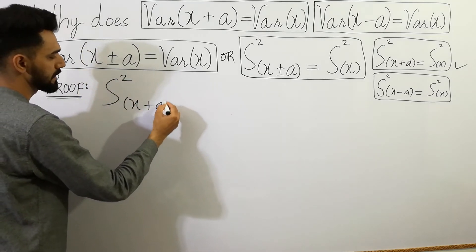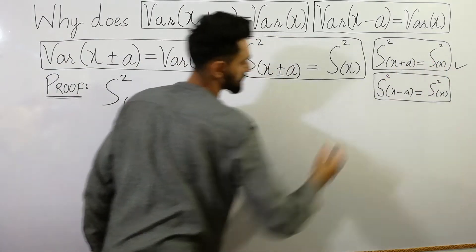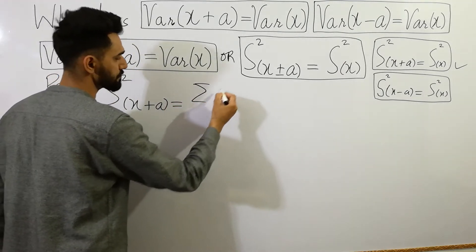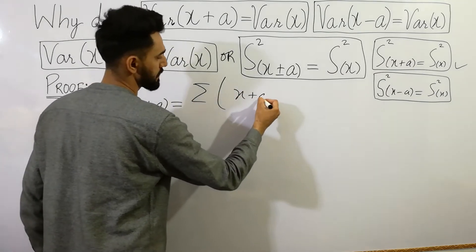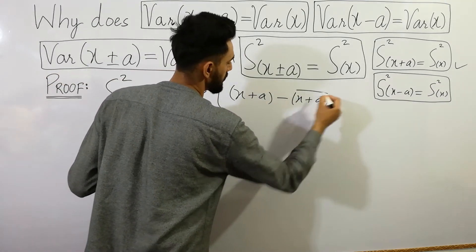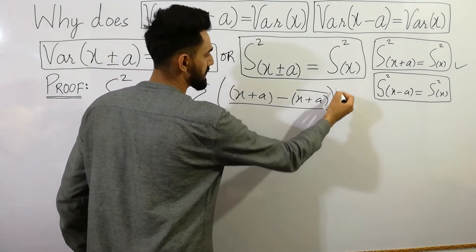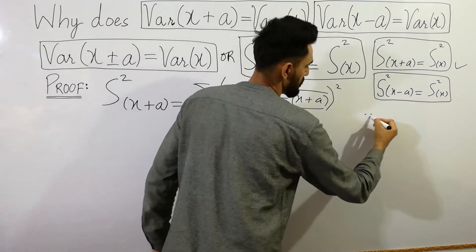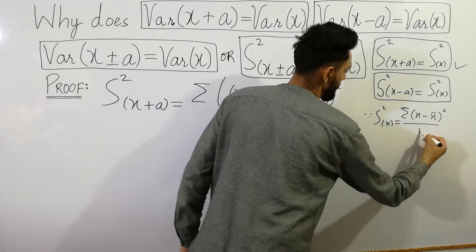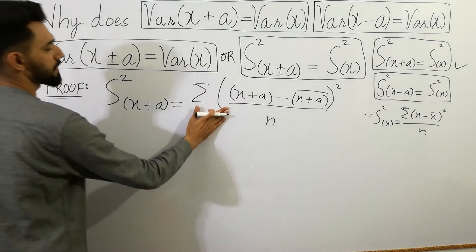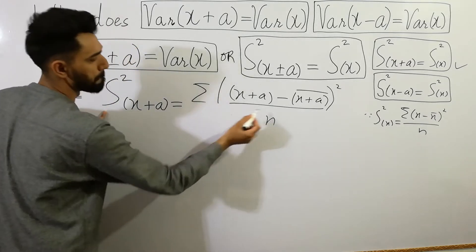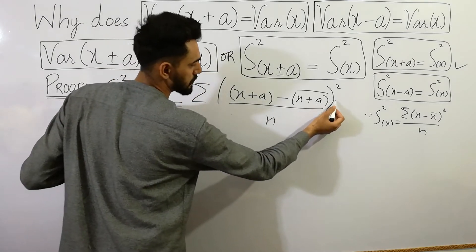So let's prove that variance of X plus a can be written as variance of X. According to the definition of variance, it can be written as the summation of (X plus a minus X plus a bar) whole squared, divided by n. You know that variance of X equals summation of (X minus X bar) whole squared divided by n. So here, variance of X plus a equals summation of (X plus a minus X plus a bar) whole squared divided by n.